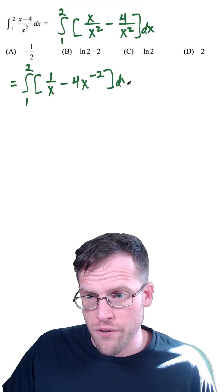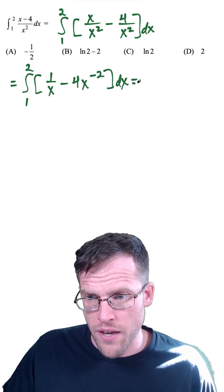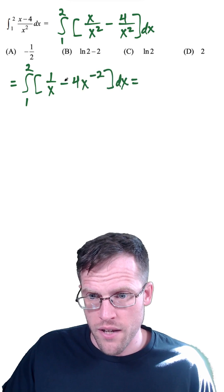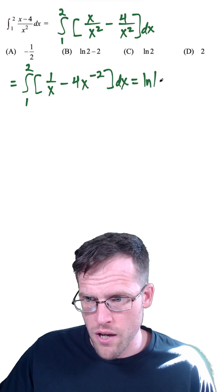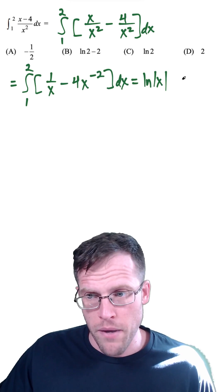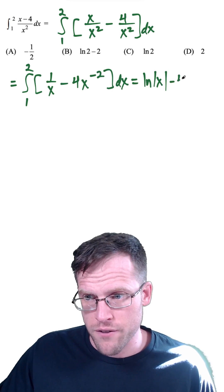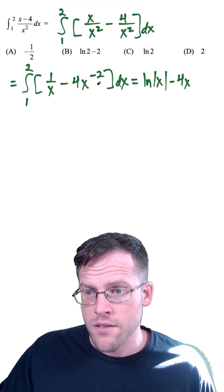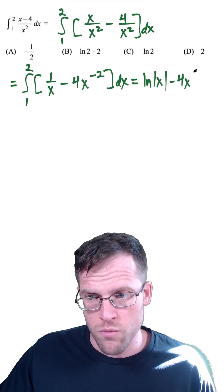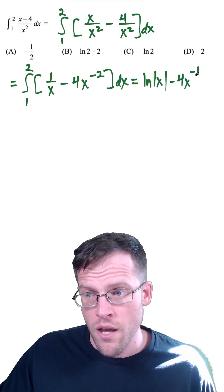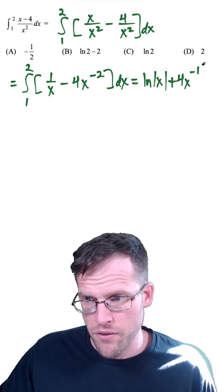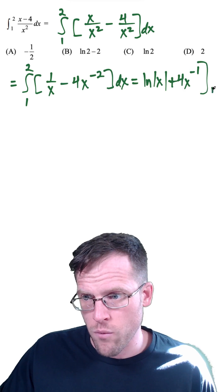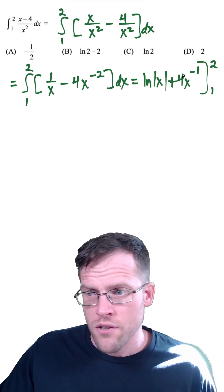From here, we're going to use the fundamental theorem of calculus. So we're going to anti-derive the first part — we get natural log absolute value x. And then we're going to use the power rule. We have minus 4x to the negative 2 plus 1, which is negative 1. And when we divide by negative 1, this will change to a plus sign in front. And we're going from 1 to 2.